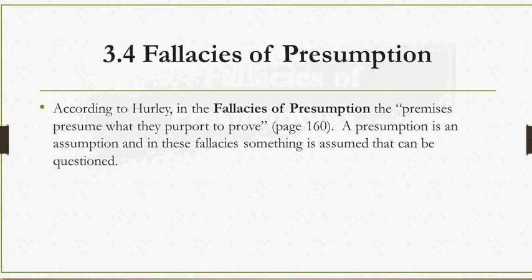Assumptions are many times hidden — they are not explicitly stated. Unlike premises, which are explicitly written or stated, assumptions can be in the background and hidden, but we know that they have to be there in order for the argument to get started or to work. What happens in these fallacies is that something is assumed that should not be assumed or that is questionable, yet the person who commits the fallacy assumes it as if there is no problem.